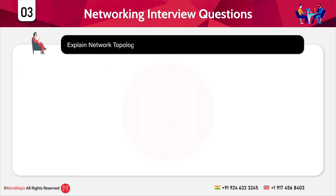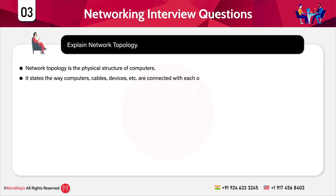The next question is: explain network topology. Network topology is the physical structure of computers — it states the way computers, cables, devices, etc. are connected with each other. The way computers are connected with each other is defined by network topology.